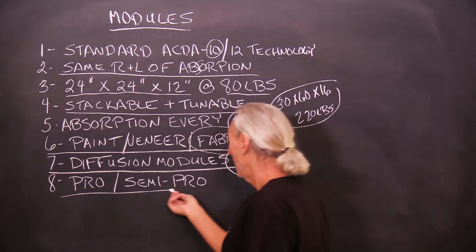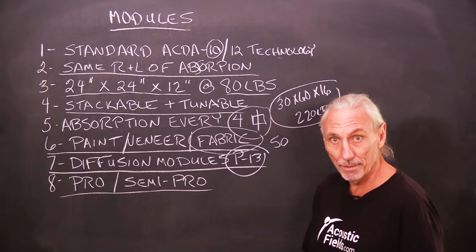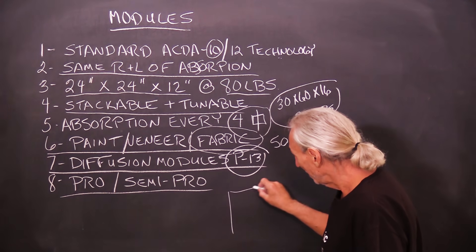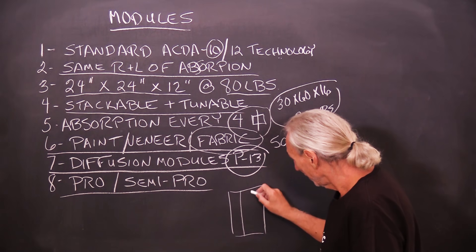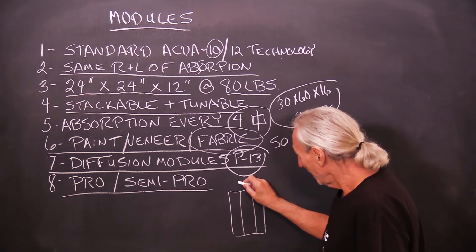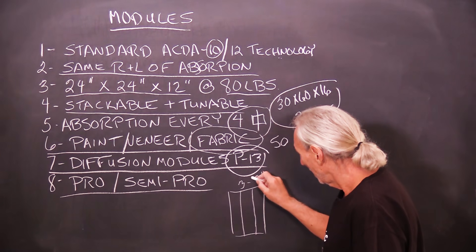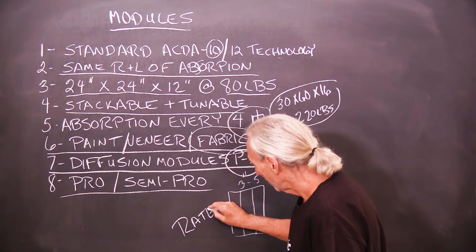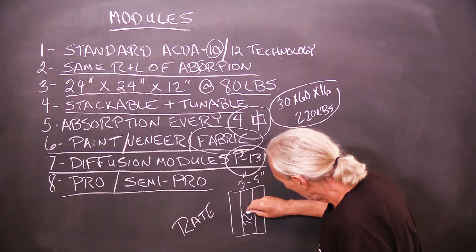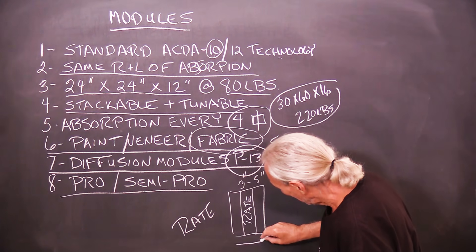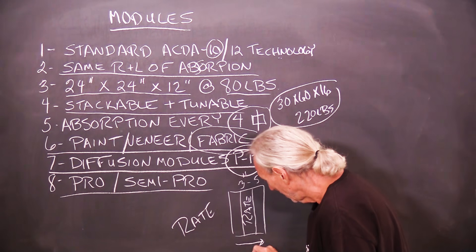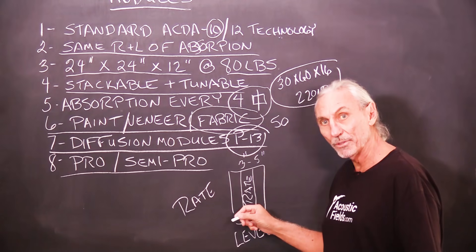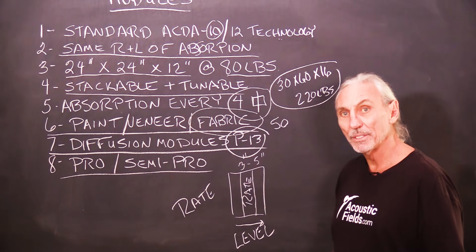So these modules are pro, semi-pro oriented, because it's very custom. Now y'all know inside the modules that we have our carbon filters. So we vary the depth on these three to five inches because this is all about rate. The carbon is rate and this is level.